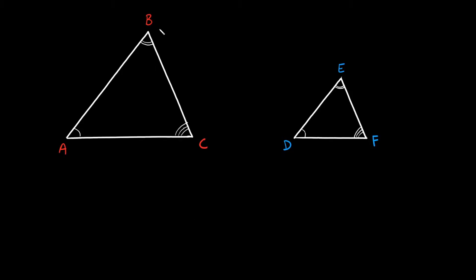So as you can see, triangle ABC here and triangle DEF are the same shape, but they're different sizes. DEF is smaller than ABC.